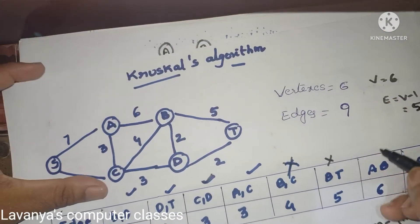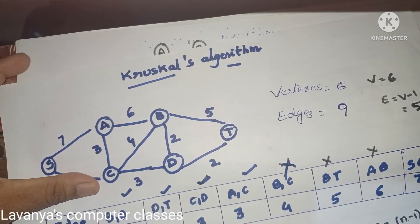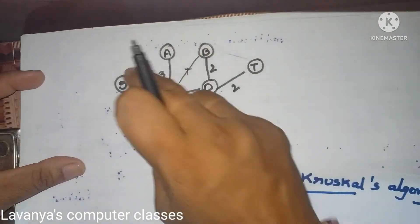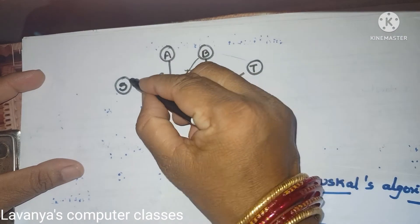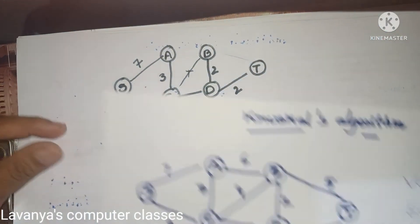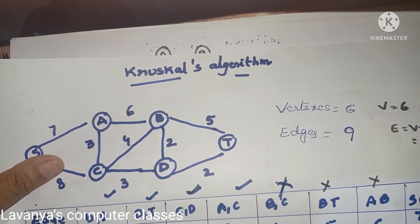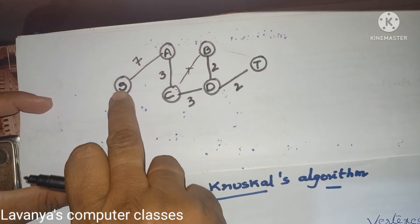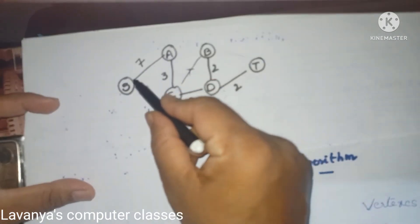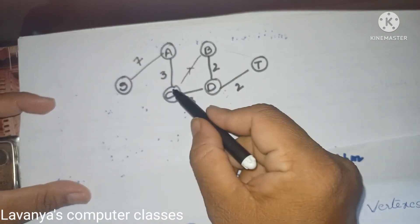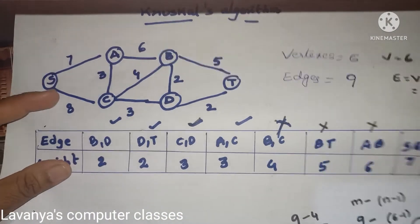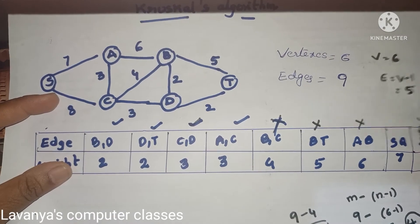Next is S–A with weight 7. Where is S–A? Here it is. If we add S–A, it does not form any cycle. So we select S–A with weight 7. The last one is S–C with weight 8. If we select S–C, it also forms a cycle — a closed one — so S–C is not added.